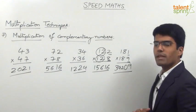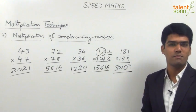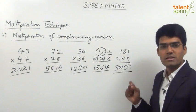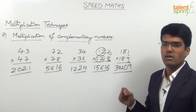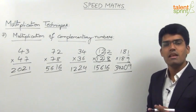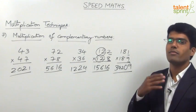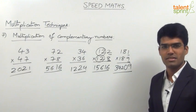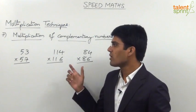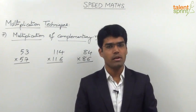So this is how we can multiply complementary numbers in simple steps. The first step is multiplication of unit places — whatever result we get, that has to be taken in the answer as a two-digit number. The next step is multiplication of the remaining part of the number with the next integer.